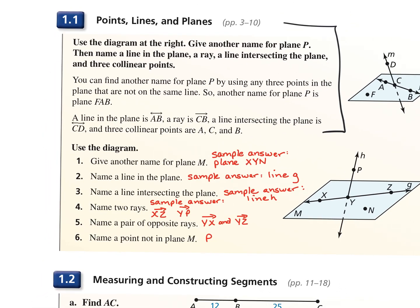For the first question, it wanted another name for plane M. Remember, when you have a capital letter with no point next to it, that is the name of the plane. Another way to name a plane is listing three non-collinear points in that section — my example would have been plane X, Y, N. You could list those points in any order.